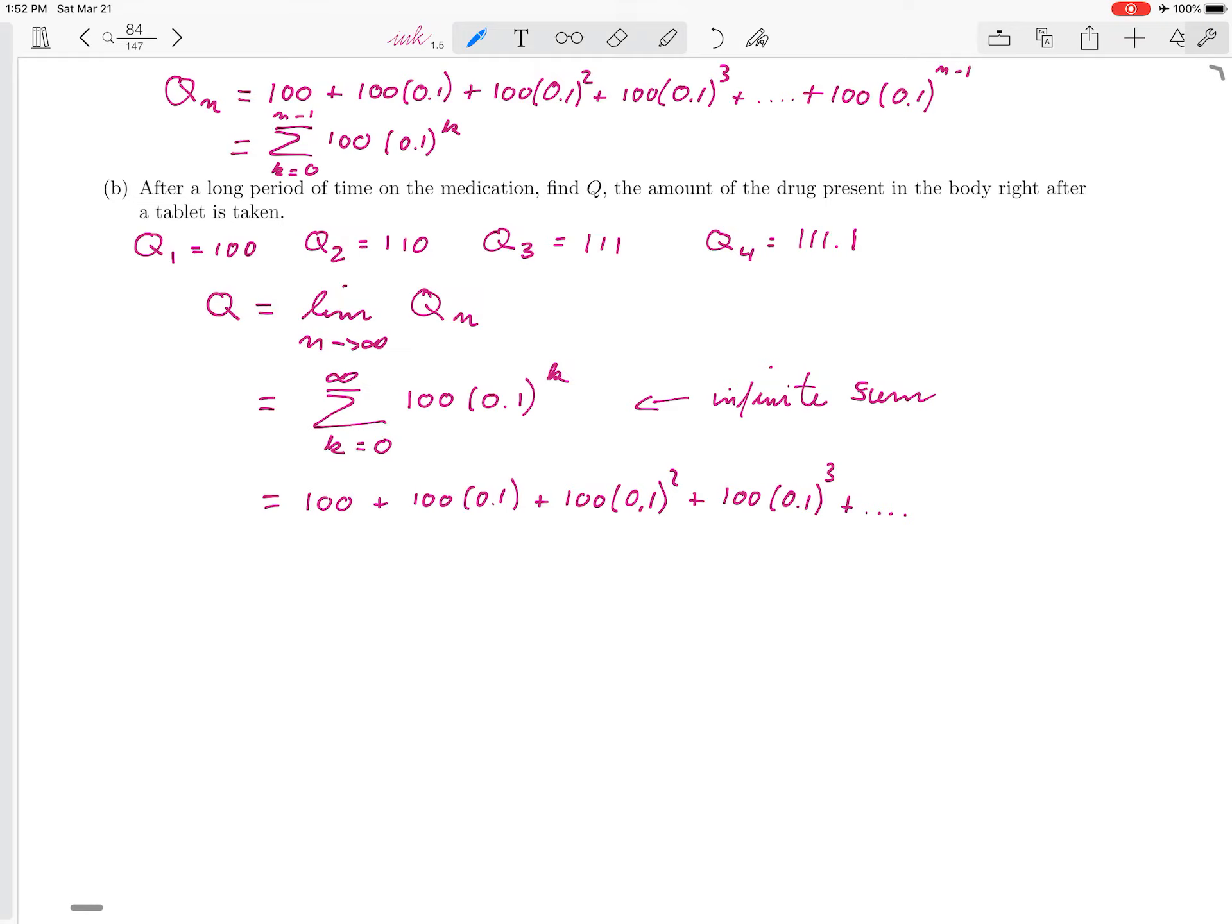What is that value? That is a big question. And it might help to organize the values we already have computed. So let's make a table. n, that is the tablet number. And we want to know what is Qn, the amount of the medication in the body, and the units of that were milligrams.